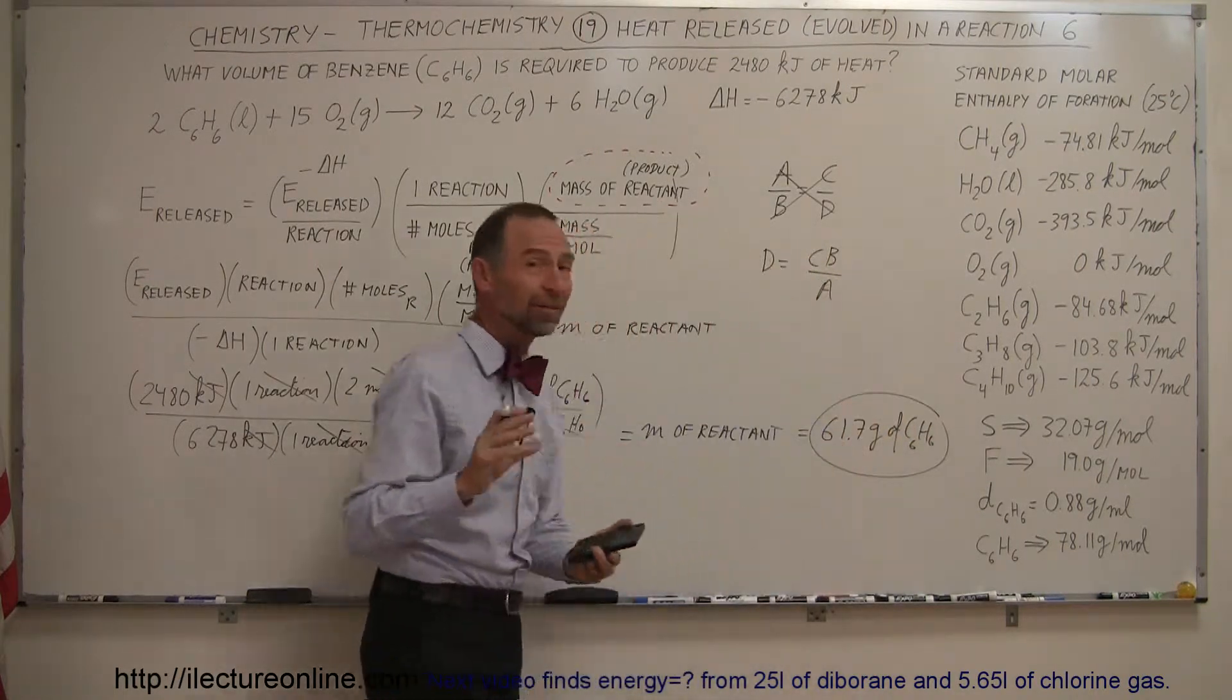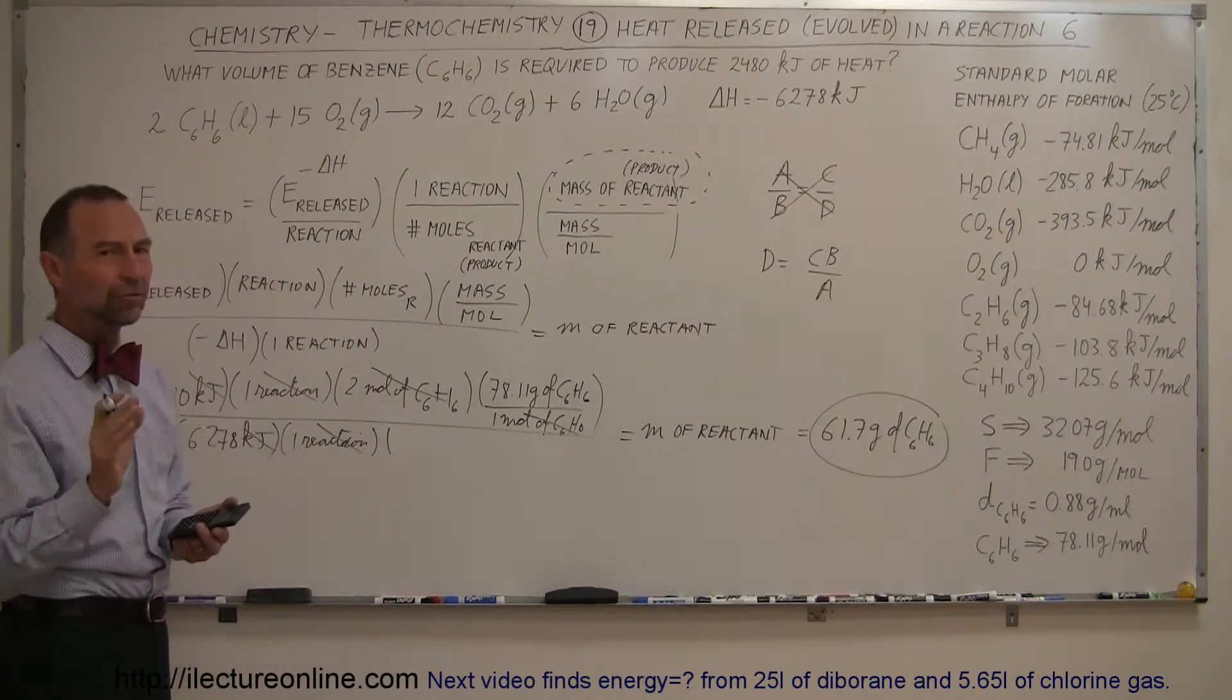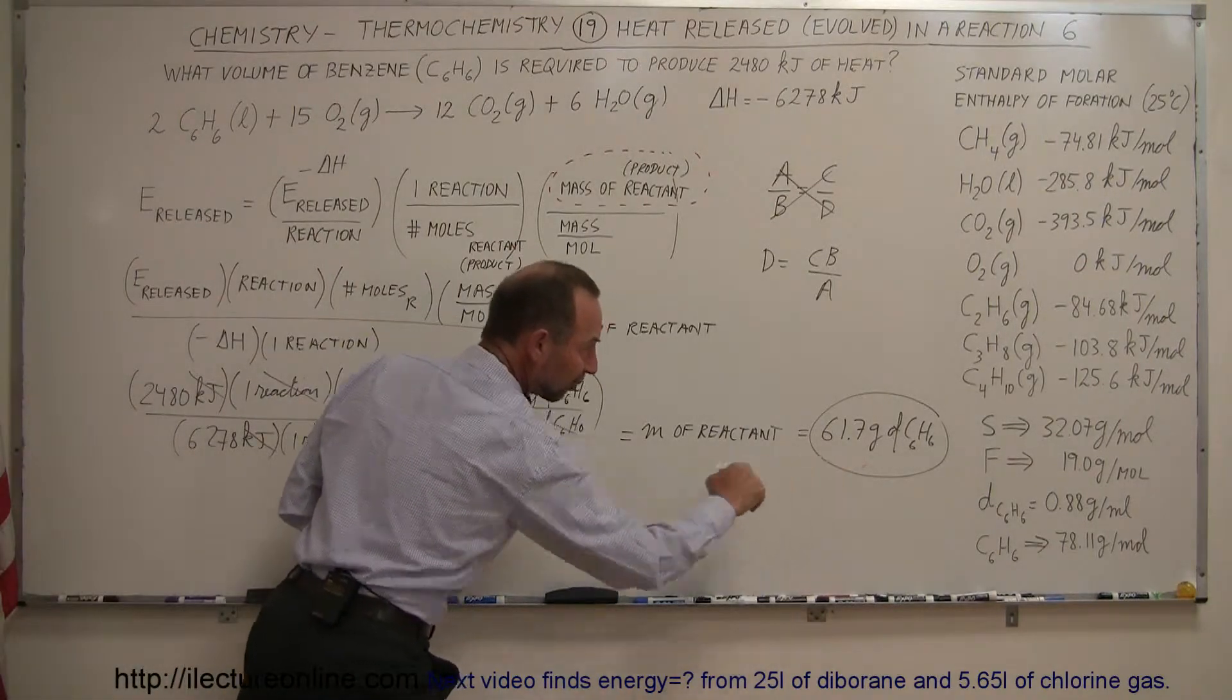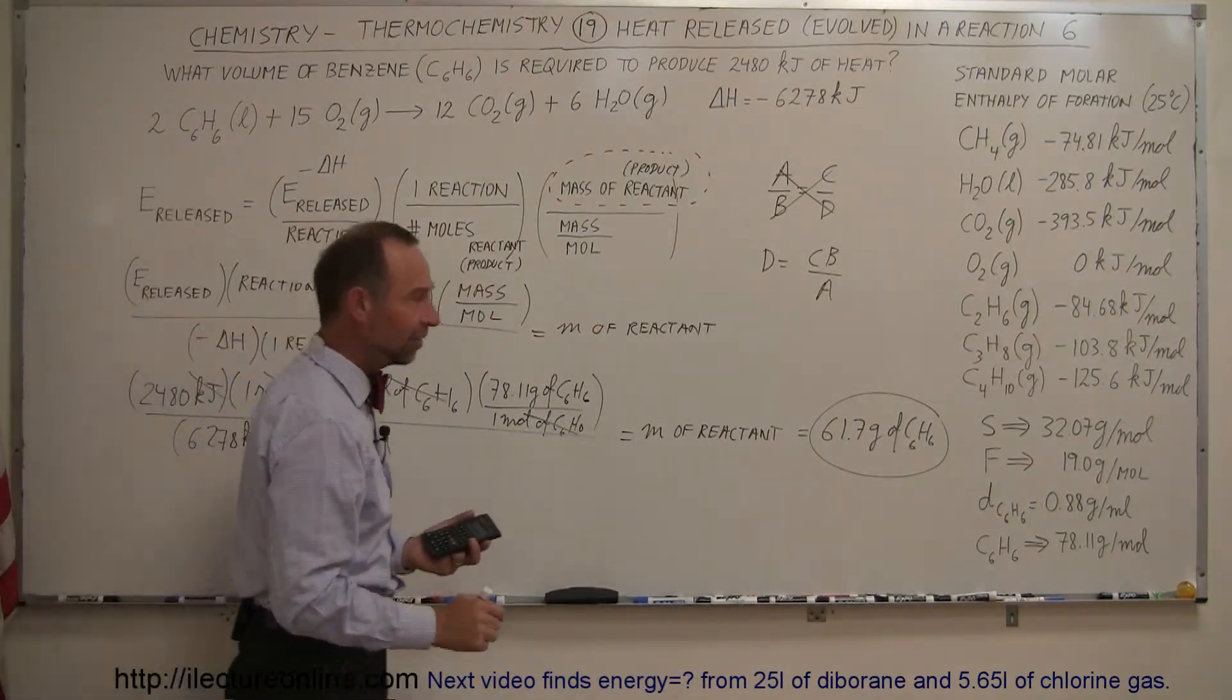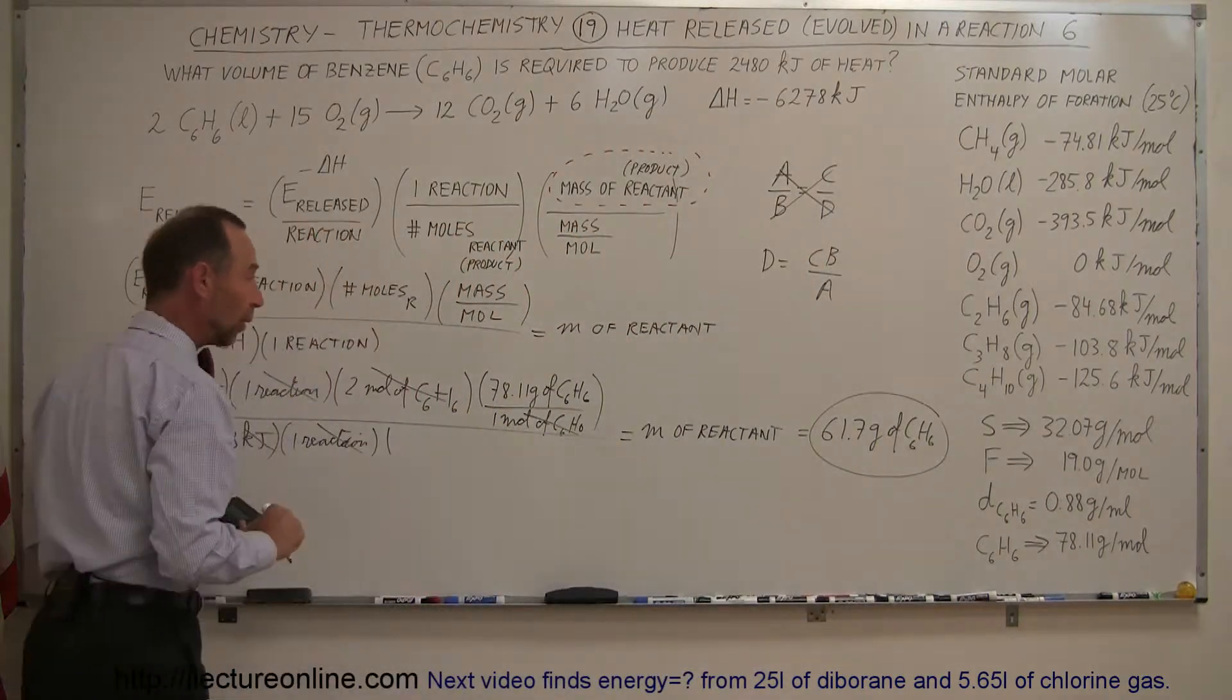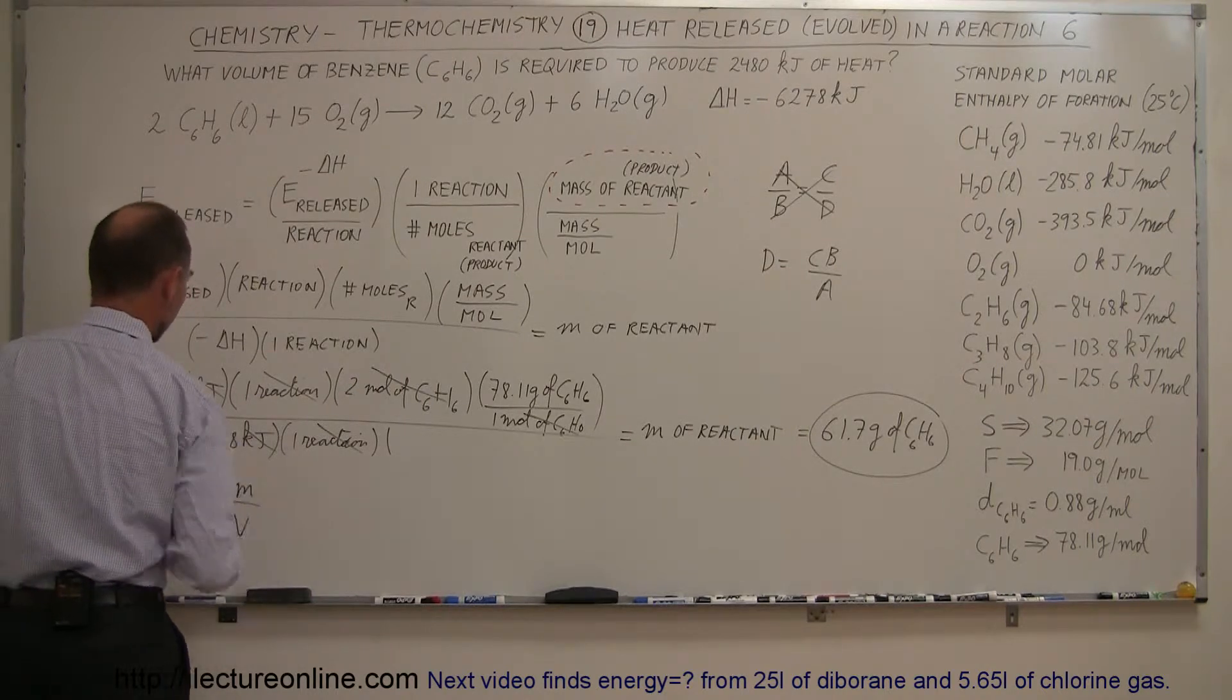So now we know the mass of the benzene, but not yet the volume, so now we have to convert from mass to volume. The definition of density, so we have the density expressed here for benzene, which is 0.88 grams per milliliter, so a little bit less dense than water, but the definition of density is equal to the mass divided by the volume.